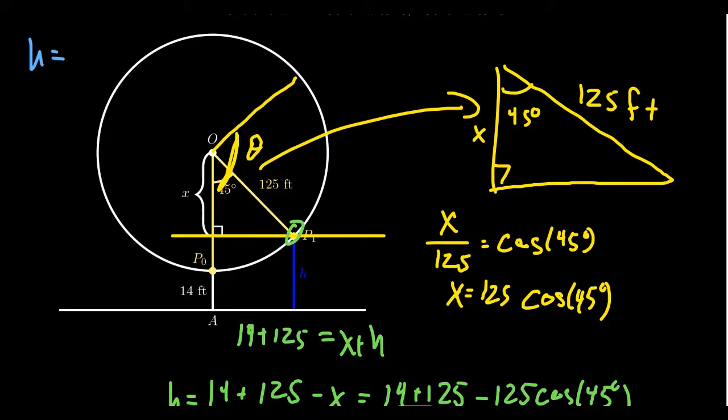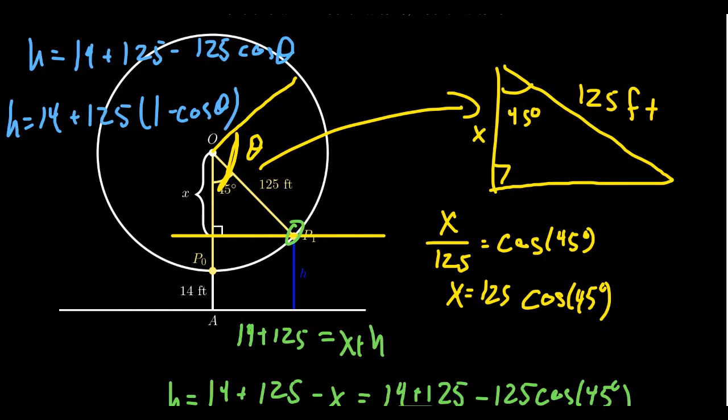We see that H is going to equal 14 plus 125 minus 125 times cosine of theta, for which you can factor out the 125 and you're going to get H equals 14 plus 125 times one minus cosine of theta. And so that gives a formula of the height of the passenger given that central angle.